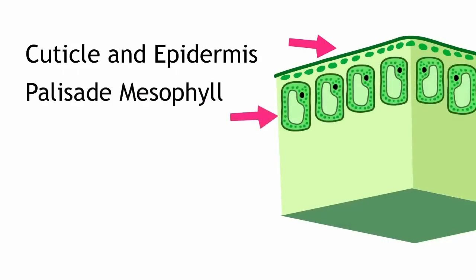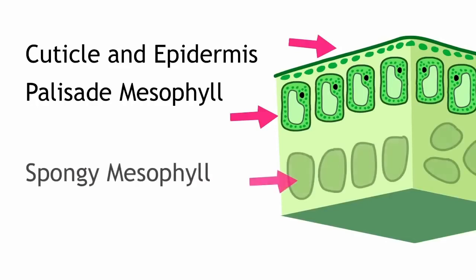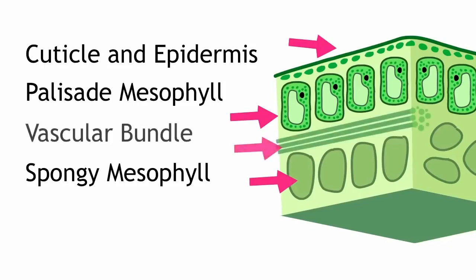Then comes the chlorophyll-rich palisade mesophyll, where the bulk of photosynthesis occurs. Below that's the spongy mesophyll, which have plenty of space in between them for reactants to move through. Through that space stretches the vascular bundle, with xylem to transport water, and phloem, which transports sugars after photosynthesis.